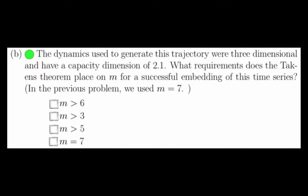This would be that m needs to be greater than 6. The Taulken's theorem says that m should be chosen greater than 2 times the dimension of the original system, which in this case was 3, so m greater than 6 is the answer. Notice that m equals 7 would work because m is greater than 6 here.